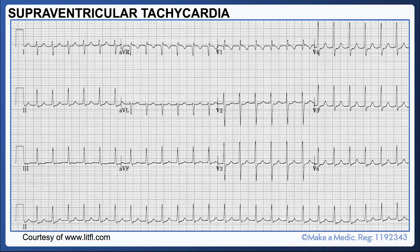This is a 12-lead ECG of a patient with an SVT. You can see that it shows a regular, narrow complex tachycardia with no clear P waves. At this stage, you wouldn't necessarily be able to tell which type of SVT it is. It's only after the patient has been cardioverted and returned to sinus rhythm that you may be able to spot a delta wave, which would be suggestive of the presence of an accessory pathway.